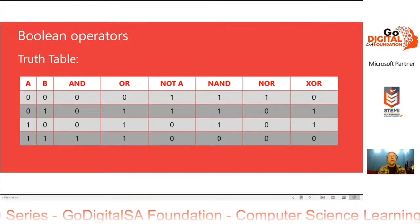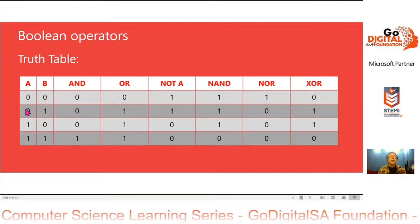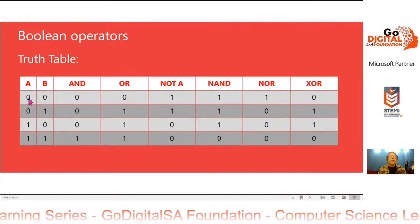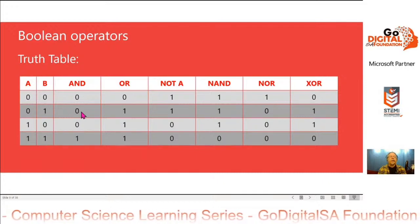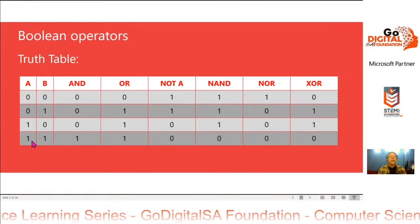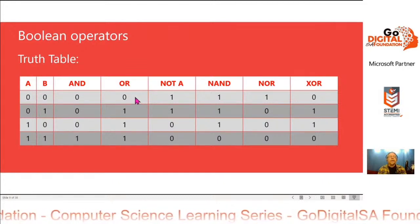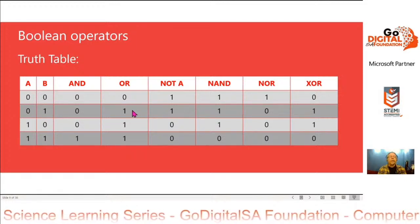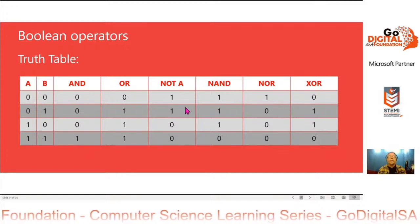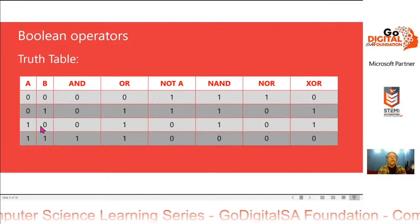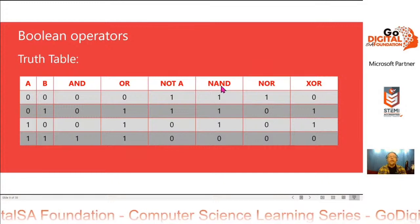Another way of doing a truth table is with zeros and ones, which is probably the more conventional way of doing it. So here we've got A AND B: A could be 0 and B 0, or A 0 and B 1, or A 1 and B 0, or both 1. If A and B are both 0, then A AND B is 0. If A is 0 and B is 1, A AND B is 0. If A is 1 and B is 0, A AND B is 0. Only when A and B are both 1 is A AND B equal to 1. For OR: if both are 0, A OR B is 0; if A is 0 and B is 1, A OR B is 1; if A is 1 and B is 0, A OR B is 1; and if both are 1, A OR B is 1. For NOT A: when A is 0, NOT A is 1; when A is 1, NOT A is 0. There are also a few other operators: NAND, NOR, and exclusive OR.